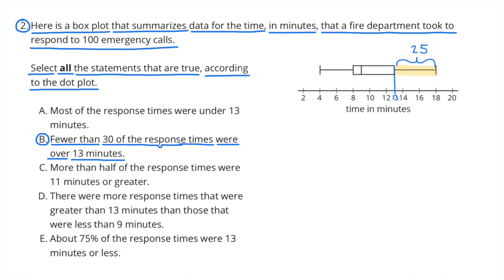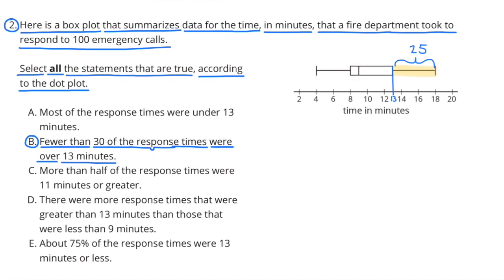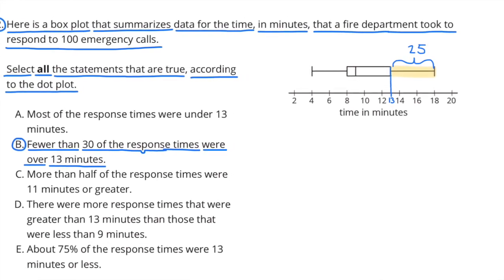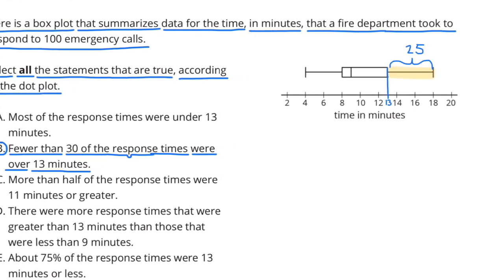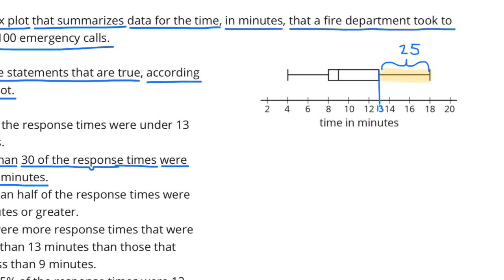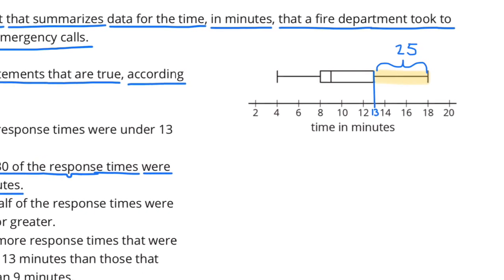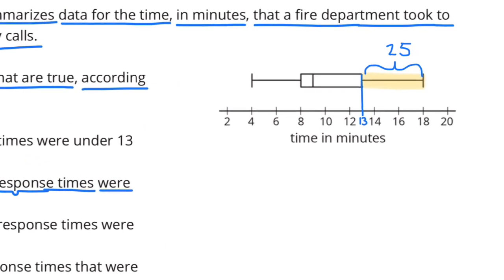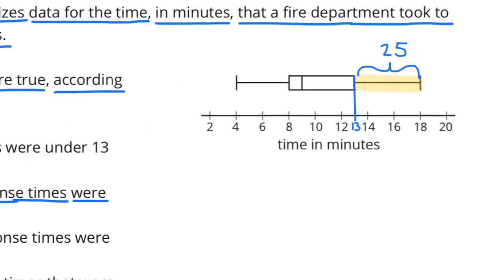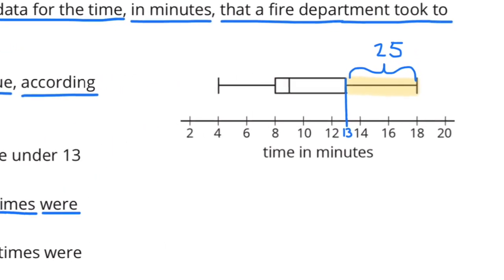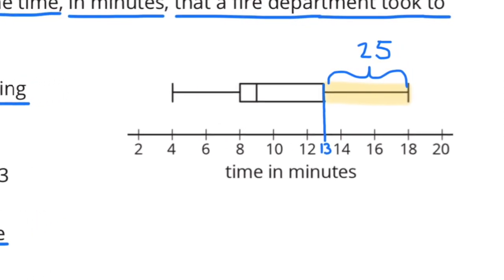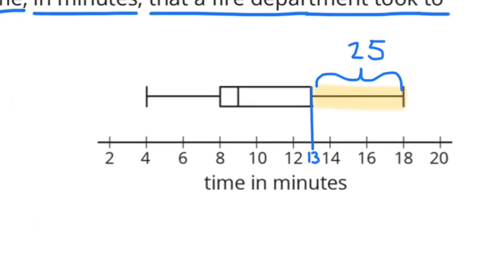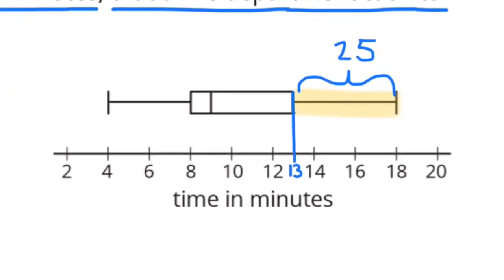Statement B is true, because fewer than 30 of the response times were over 13 minutes. Since there were 100 emergency calls, this section in yellow has a value of 25, because 100 emergency calls divided by the four sections in this box plot equals 25. And 25 is fewer than 30.